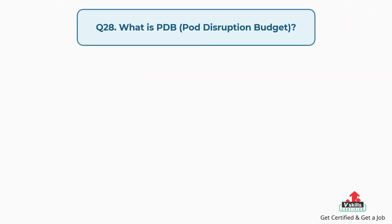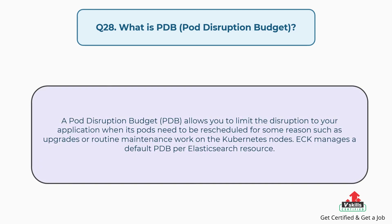Question number twenty-eight: What is pod disruption budget? A pod disruption budget allows you to limit the disruption to your application when its pods need to be rescheduled for some reason such as upgrades or routine maintenance work on the Kubernetes nodes. ECK manages a default PDB per Elasticsearch resource.